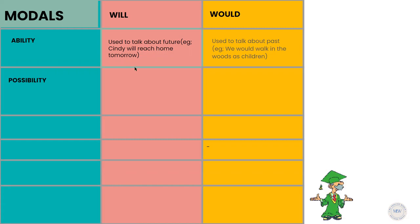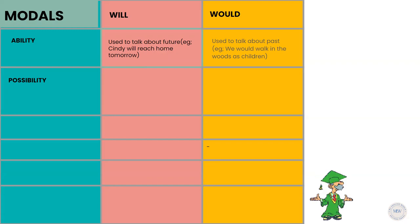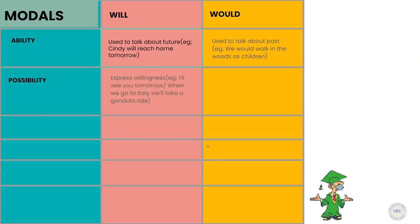Would is used to talk about the past — would is the past tense of will. For example: We would walk in the woods as children. This means there was something we used to do regularly, perhaps every weekend we used to go for a walk in the woods. So instead of saying we used to walk in the woods, we can say we would walk in the woods as children, talking about a past daily routine.